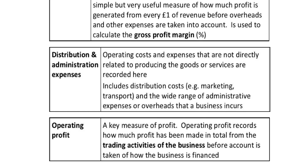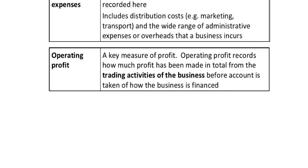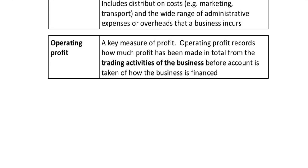Operating costs are expenses not directly related to producing the goods or services — they tie in with fixed costs. Once you have gross profit and expenses, you can work out your operating profit, sometimes known as net profit or simply profit. Operating profit records how much profit has been made in total from the trading activities of the business before account is taken of how the business is financed. The profit margin formula is: profit divided by sales revenue, multiplied by 100 — this gives an indicator of how well the business is managing its expenses.